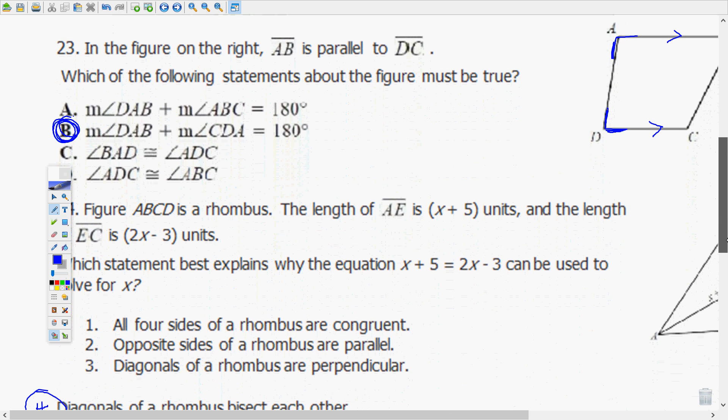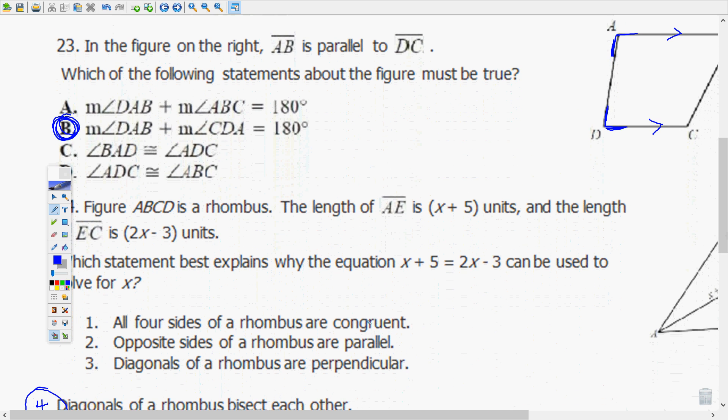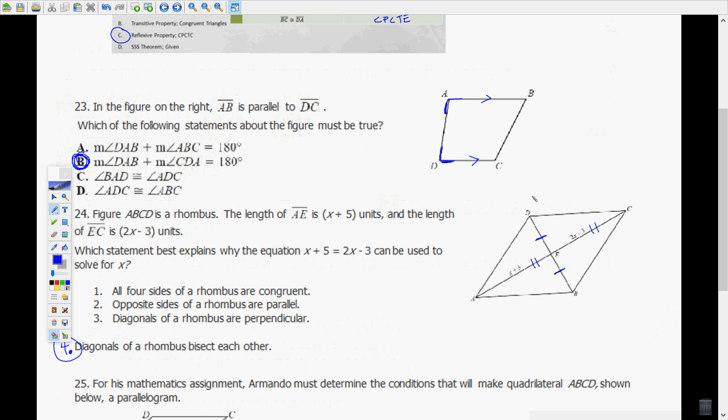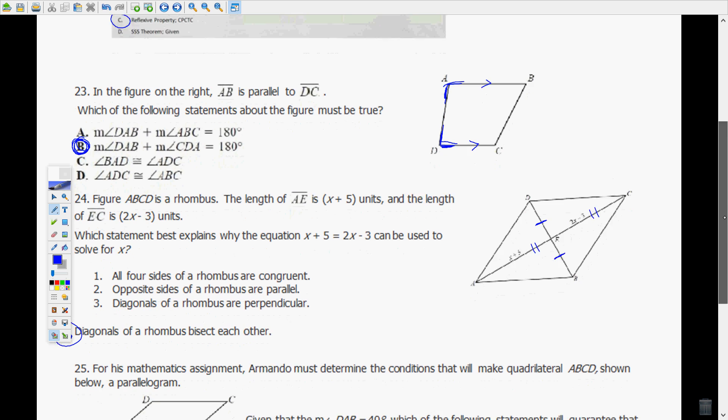23, in the figure on the right AB is parallel to DC. Which of the following statements about this figure must be true? Whenever you have parallel lines, same side interior angles are supplementary. So that's why B is the answer here. We don't know anything else about this quadrilateral except that those two sides are parallel, so that's all you can assume here.